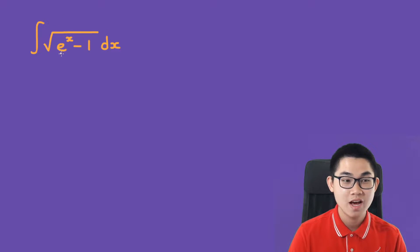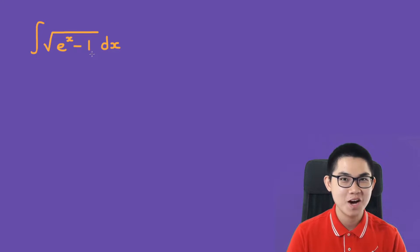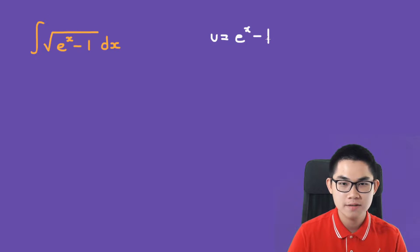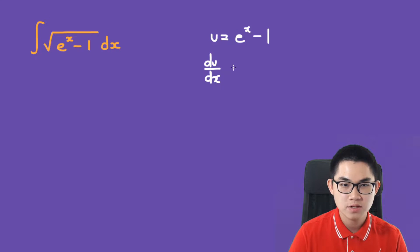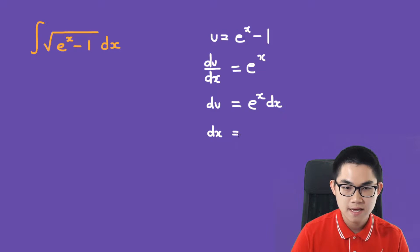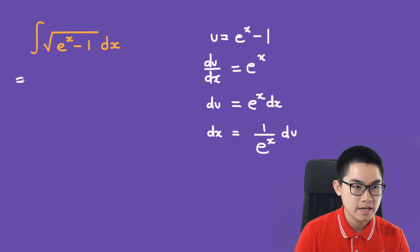The integral of the square root of e to the power of x minus 1 dx. This can be solved with u-substitution. Let u equal e to the power of x minus 1. Differentiating with respect to x we have e to the power of x, so du is e to the power of x dx, and dx is 1 over e to the power of x du.